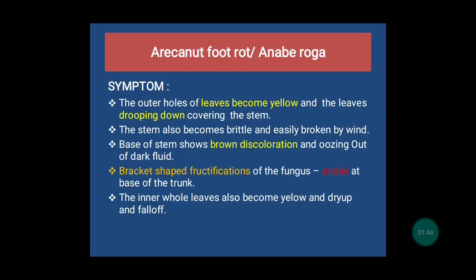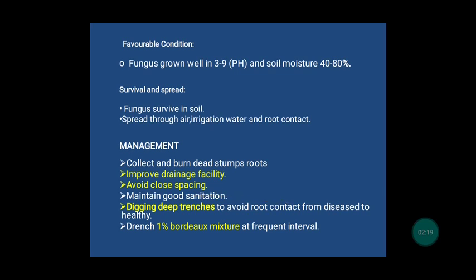The next disease is arecanut fruit rot disease, otherwise called Anabironga. The causal organism is Ganoderma lucidum. The major symptoms are the outer leaves become yellow and droop down covering the stem. Then the stem becomes brittle and easily broken by wind. The base of the stem shows brown discoloration and oozing out of dark fluid. A bracket-shaped fruiting body of fungus seen at the base of the trunk is called Anabironga. At last, the whole leaves become yellow, dry up and fall off. The favorable condition for the fungus is growth in 3–9 pH and soil moisture 40–80%. The fungus mainly survives in soil and spreads through air, irrigation water, and root contact.